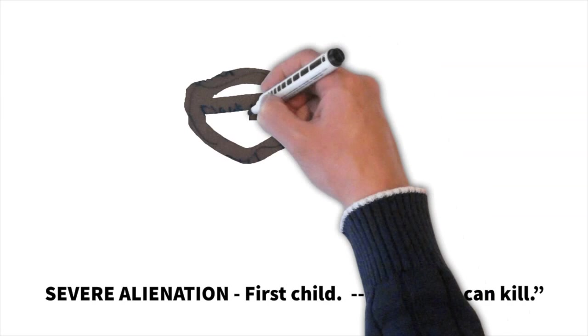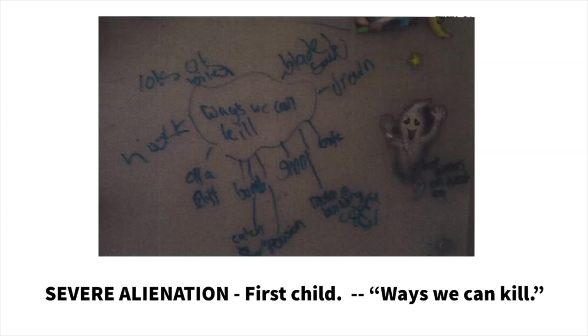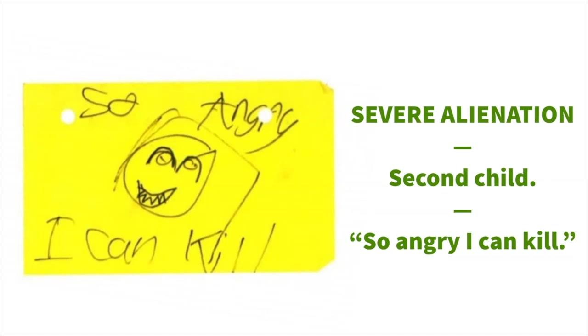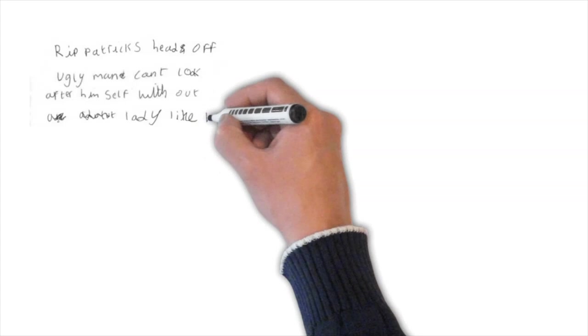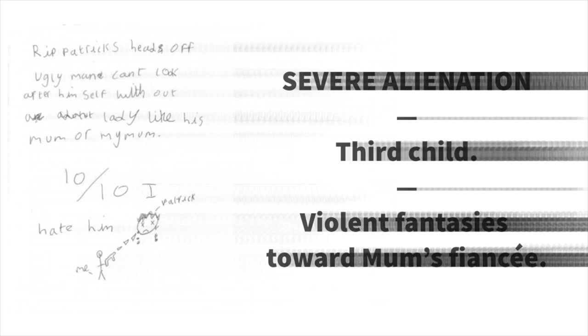Then to severe alienation. The first child. Ways we can kill. Off a cliff. Bombing. Shoot. Knife. Drowning. Black soup. The second child. I'm so angry I can kill. The third child. Rip Patrick's head off. Ugly man. Can't look after himself without a lady like his mom or my mom. I hate him 10 out of 10. And here he is shooting Patrick with a gun.